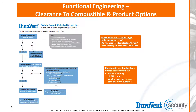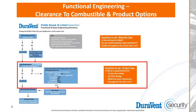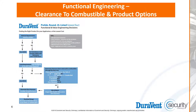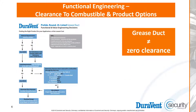In terms of functional engineering, clearance to combustibles and product options are probably your number two ways to save cost. To make the right decision you need to answer a couple of questions: Is there a requirement for a two-hour fire rating or UL 2221 listing? If so, this is a DIS 3Z zero clearance product. But if that is not the case, what are your clearances throughout the duct run? Because grease duct does not equal zero clearance.